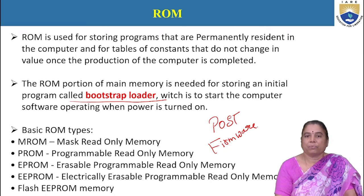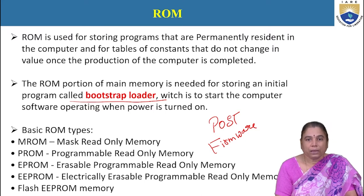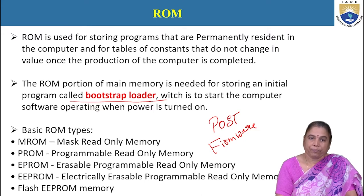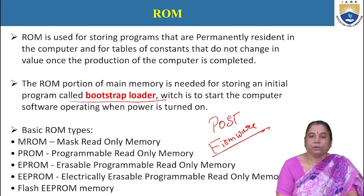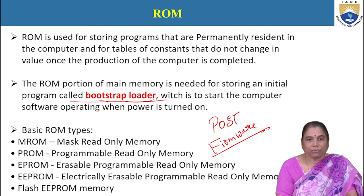Hardware deals with the physical equipment of the computer; software is a collection of programs that perform the intended functionality. The ROM is a chip — it comes under the category of hardware — and the bootstrap loader is a program, so it comes under software. The combination of hardware and software is generally referred to as firmware. So the ROM chip is hardware loaded with the software bootstrap loader, making it firmware. There are various ROM chips available.